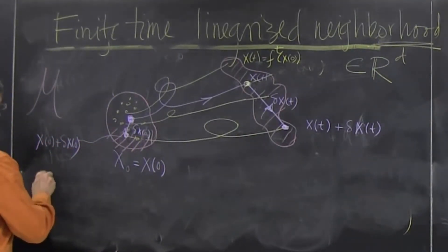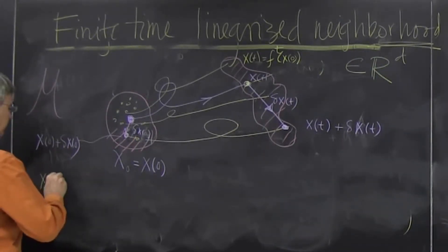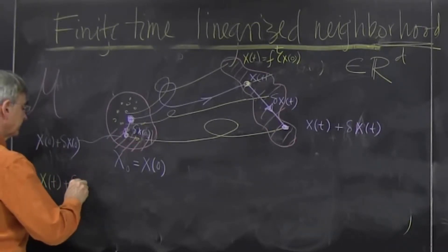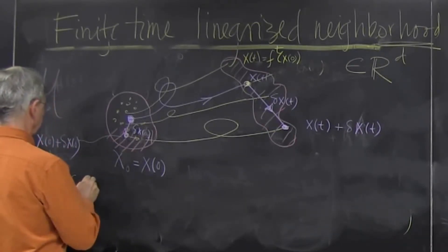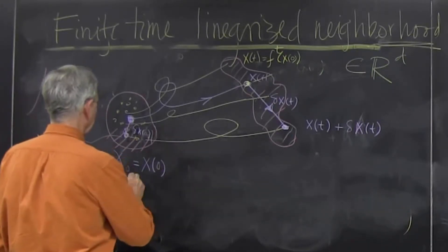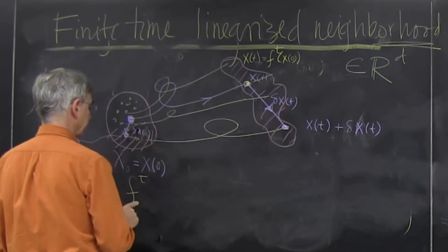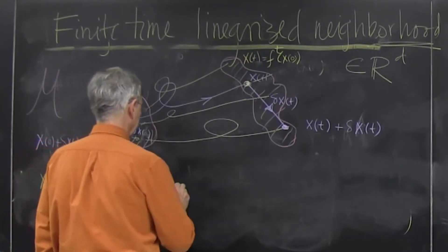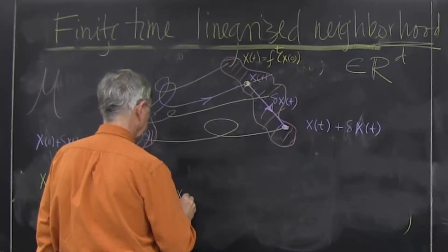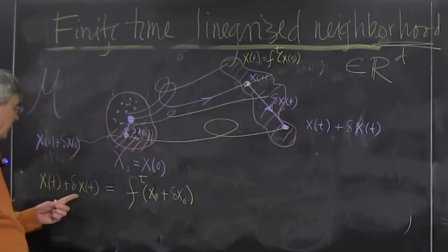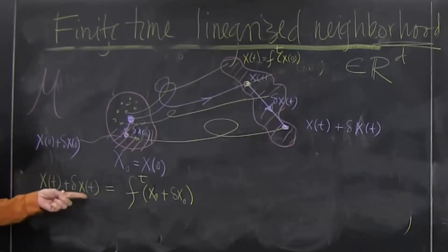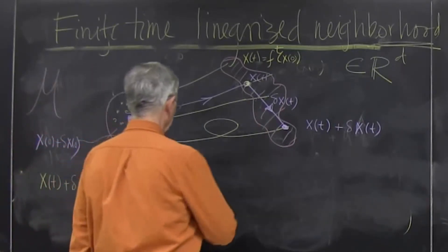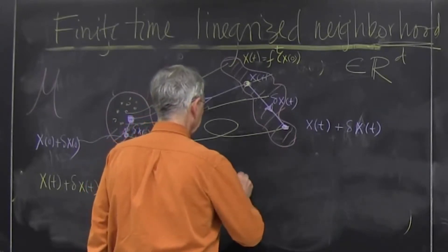So now I look at, I write x at finite time, I write it as a finite map of this point, x0, plus the initial displacement to find what the final displacement is. And all these things are d-dimensional vectors, this function as well. Again, the Taylor expansion.